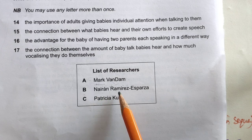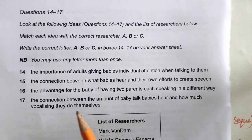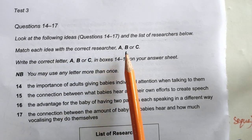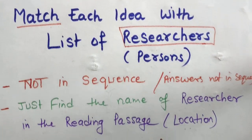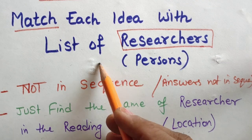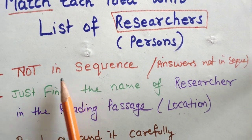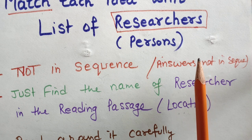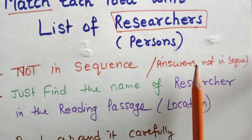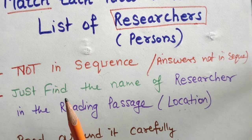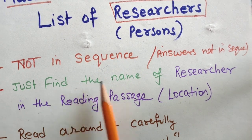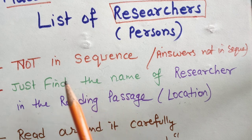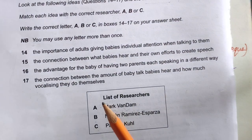The researchers are: A - Mark van Dam, B - Nairan, C - Patricia Kuhl. These are the list of ideas, and we have to match each idea with the correct researcher A, B, or C. Let's look at the steps we should follow. First, these questions are not in order — it means answers may come from any paragraph.